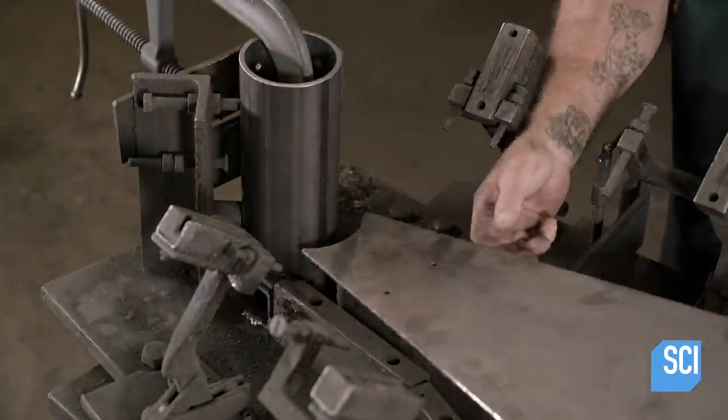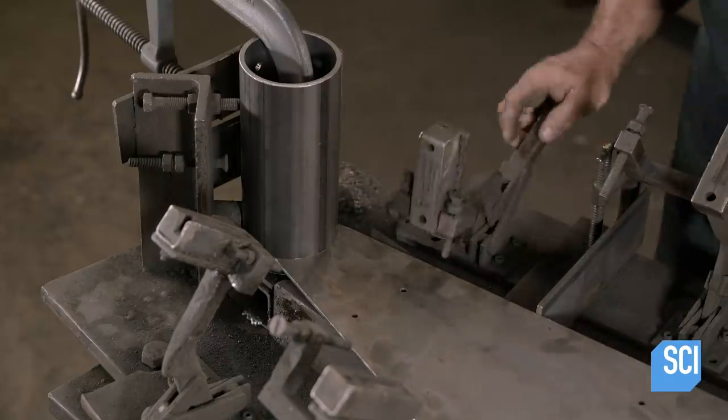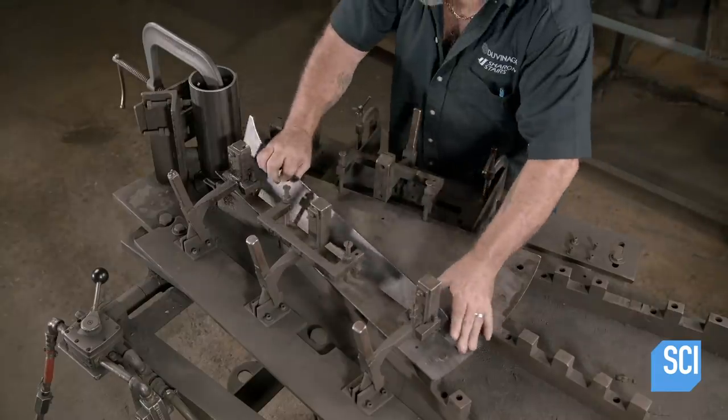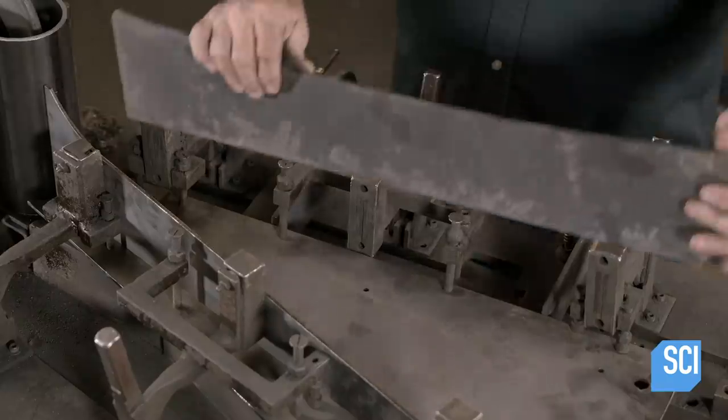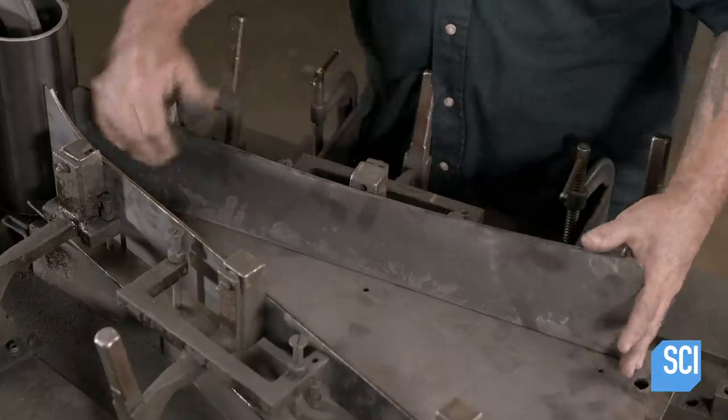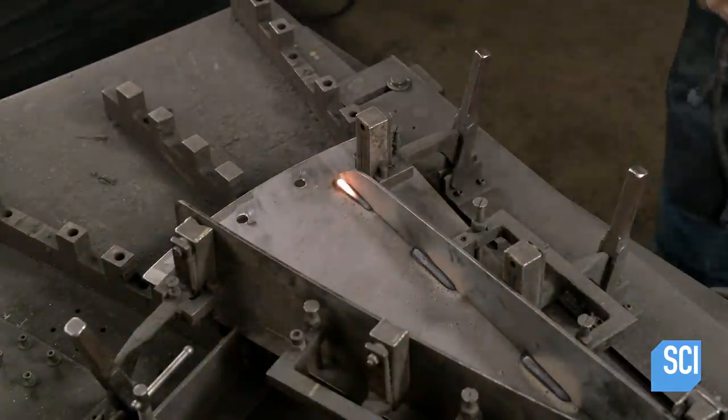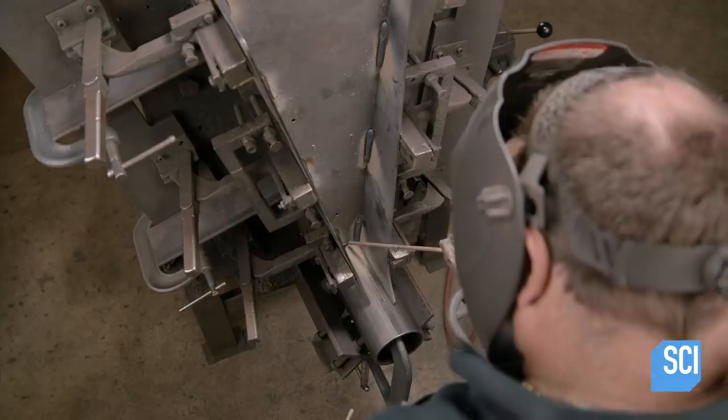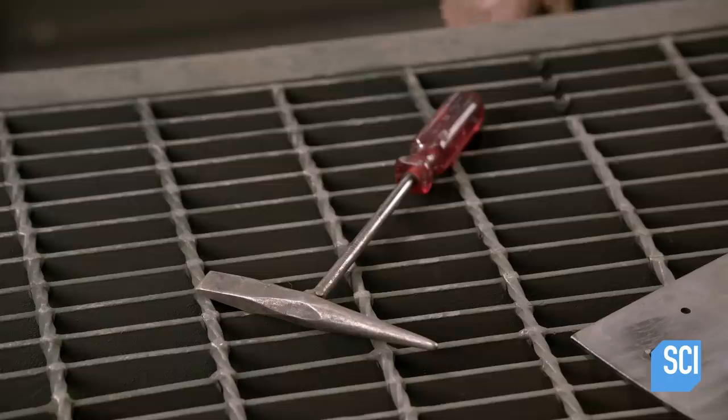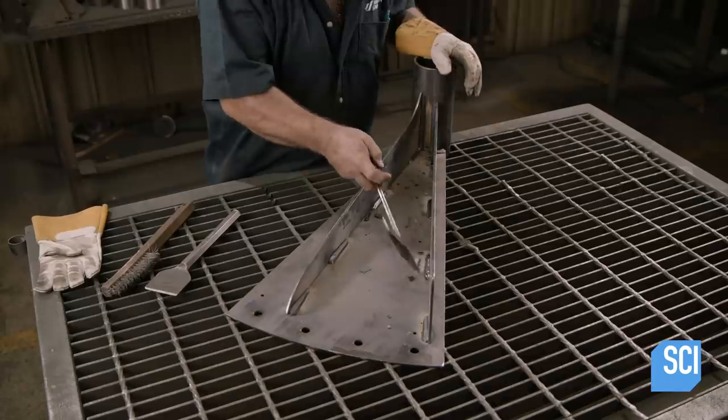A worker nestles the tread to the hub and clamps them in a weld fixture. He also clamps structural supports to the base of the tread. With everything in the right configuration, he welds the supports to the tread and the hub. He'll make 12 of these hub and tread assemblies. He chips off the weld slag for cleaner seams.